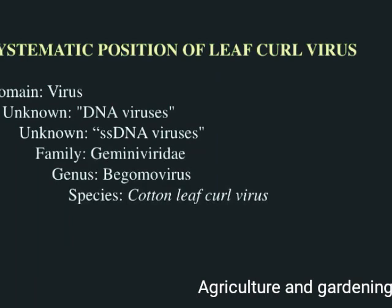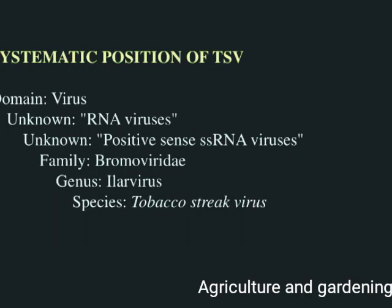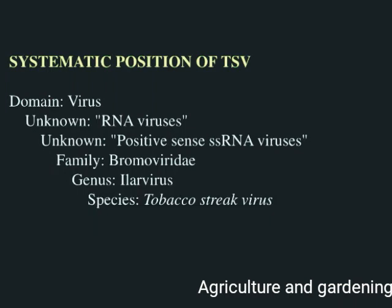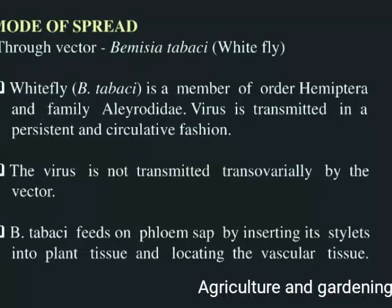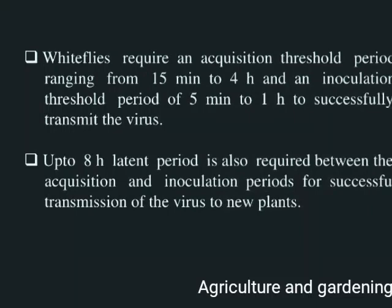Cotton leaf curl virus is a DNA virus belonging to the family Geminiviridae and genus Begomovirus, species Cotton Leaf Curl Virus. In the case of Tobacco Streak Virus, it is an RNA virus belonging to the family Bromoviridae and genus Ilarvirus, species Tobacco Streak Virus.